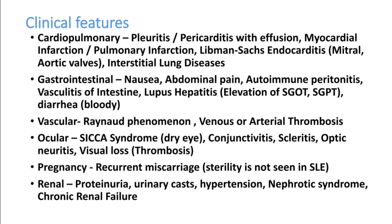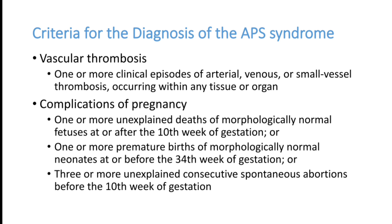Renal system involvement is very common — many patients can have acute renal failure and proteinuria. One of the major complications of SLE, especially in females, is antiphospholipid syndrome. Antiphospholipid syndrome means the patient can have recurrent thrombosis and complications during pregnancy. Recurrent thrombosis includes deep vein thrombosis, pulmonary embolism, stroke, and myocardial infarction. Recurrent abortions are a classical feature of antiphospholipid antibody syndrome, and unexplained fetal loss is very common.